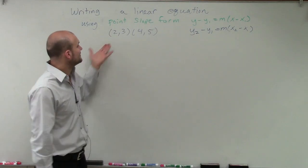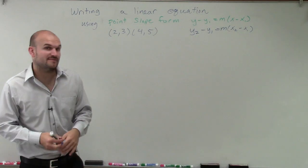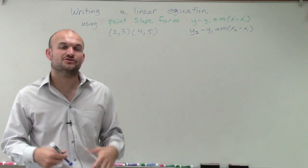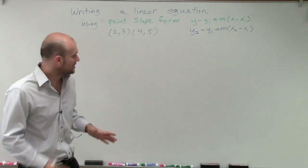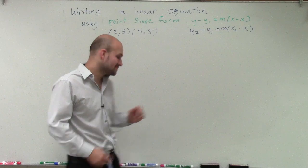Welcome. So what we have is 2 comma 3 and 4 comma 5. Those are two points, and what they're asking us to do is write an equation in slope-intercept form. We're going to do that by using point-slope form.